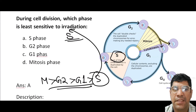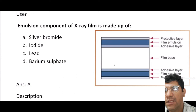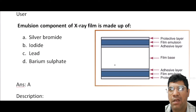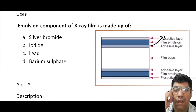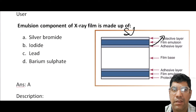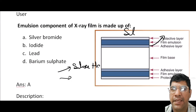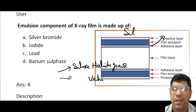During the S phase, DNA synthesis and replication are ongoing, making cells less vulnerable to radiation damage compared to other phases. The emulsion component of x-ray film is made up of silver bromide. The emulsion has two principal components: silver halide grains (primarily silver bromide) and a gelatin matrix.